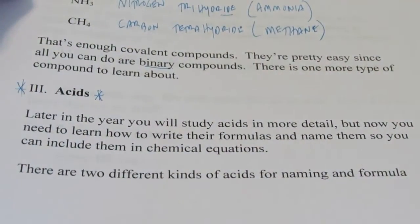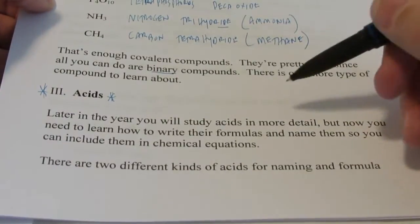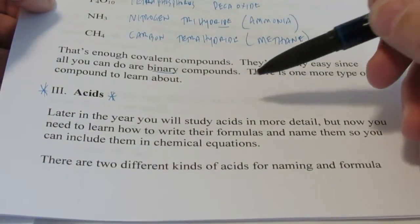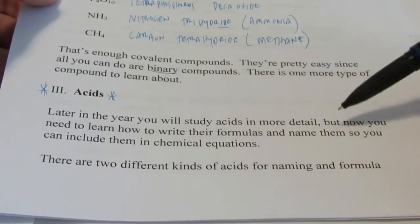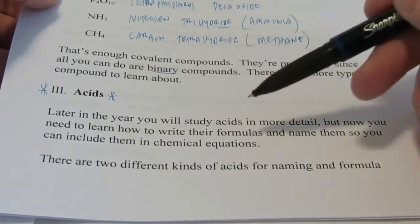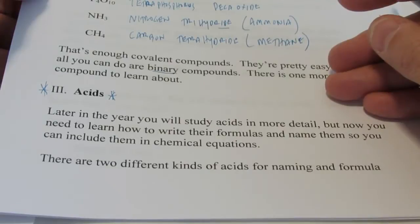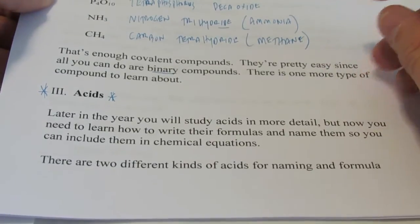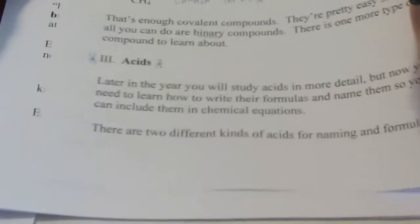Now, later in the year we're going to study acids in much more detail. But for now, all you need to do is learn how to write their formulas and name them, so we can include them when we learn how to write chemical equations, which is coming up very soon. There are two different kinds of acids for naming and formula writing.